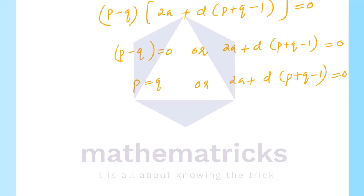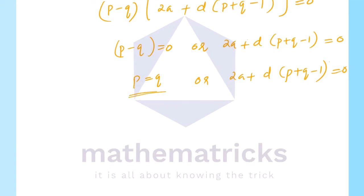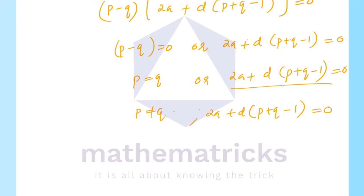Here, p equal to q: since the sum of the first p terms equals the sum of the first q terms, this case means p equals q, which is trivial. So the next case must be satisfied: 2a + d(p + q - 1) = 0. Let's use this to prove the result.